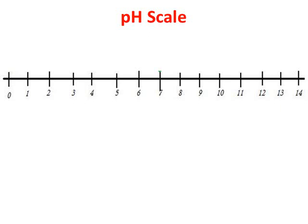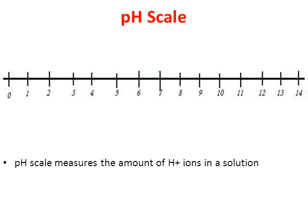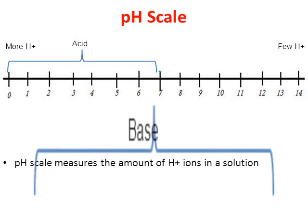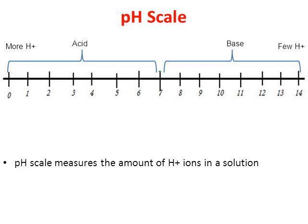Whenever we talk about solutions, we're going to mention the pH scale. The pH scale measures the amount of hydrogen ions that a solution contains. Everything below seven on the pH scale is considered an acid, and acids have more hydrogen ions. Above seven is what we call a base. Bases have very few hydrogen ions, but bases have a lot of what are called hydroxide ions — that's what the OH symbol represents, an ion called hydroxide made up of hydrogen and oxygen. Acids have very few hydroxide ions. Right in the middle of the pH scale is neutral seven.